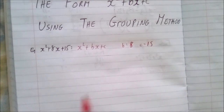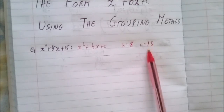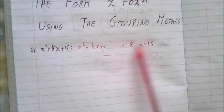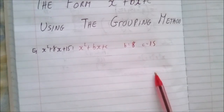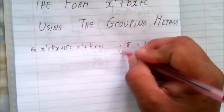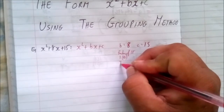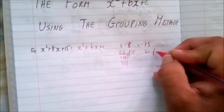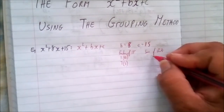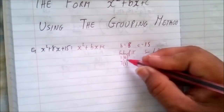Now that we have found the two integers whose product is the key number 15 and whose sum is 8 — since the integers must have a positive product and a positive sum — the only possible factors of 15 are 1 and 15, or 3 and 5. The sum of 1 and 15 gives 16, and 3 plus 5 gives 8.